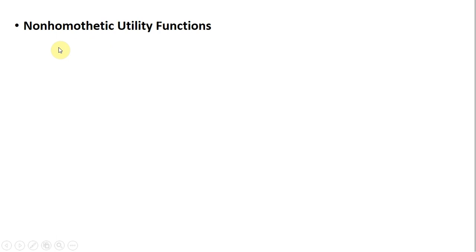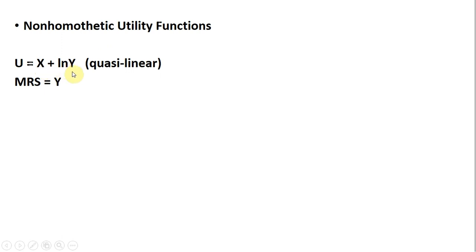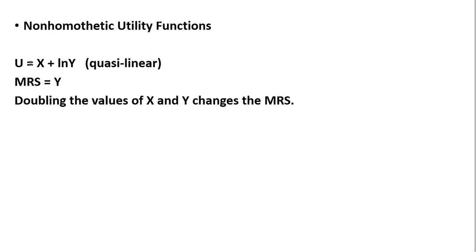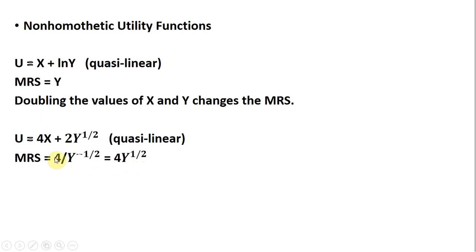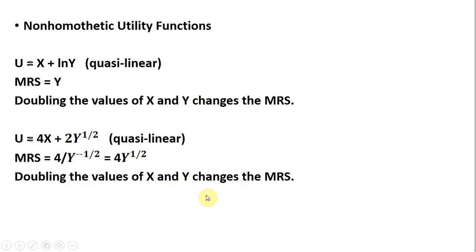Now for some utility functions that are non-homothetic. Here's a quasi-linear utility function. The marginal rate of substitution for this one is just going to be y. Notice the marginal utility of x is 1, and the marginal utility of the natural log of y is 1 over y, so the marginal rate of substitution equals y. If we were to double the values of x and y, the marginal rate of substitution would change — it would increase. Here's another quasi-linear utility function: marginal utility of x divided by marginal utility of y. Again, doubling the values of x and y changes the marginal rate of substitution.